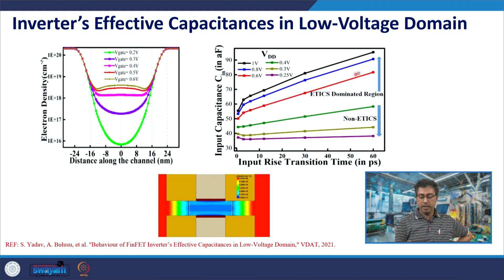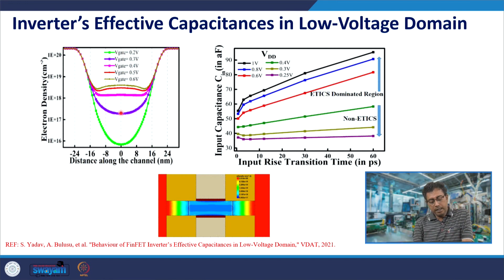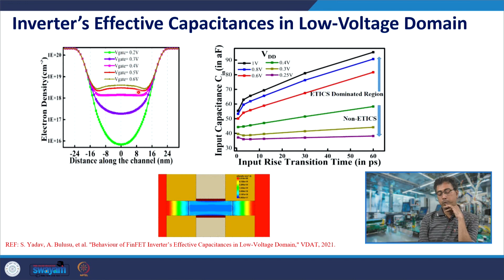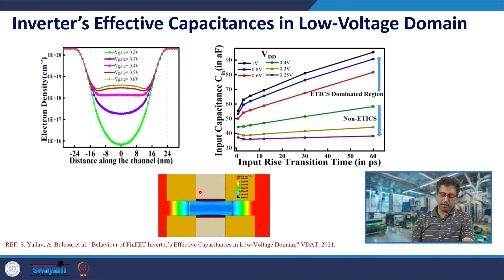In the strong inversion regime the increase in effective capacitance is larger; in the moderate inversion regime the increase is smaller. In moderate or weak inversion, when you increase the gate voltage, the increase in channel charge is not as significant as the increase in charge in the low-doped extension region. Whereas in strong inversion, the increase in channel charge is more significant than the increase in inversion charge in the low-doped drain extension. As you increase the gate voltage toward VDD — say 0.4 V in a near-threshold regime — the main channel gate capacitance increases and the capacitance component due to the low-doped drain extension becomes less significant.